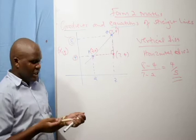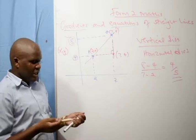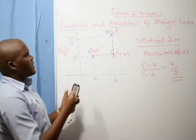Now, before we go further — that was just explaining what we mean by gradient. Let me introduce you to four different types of lines that we can have.